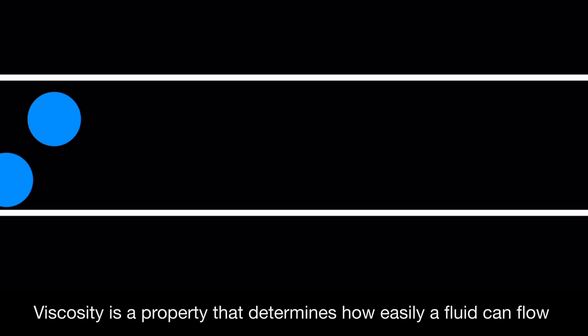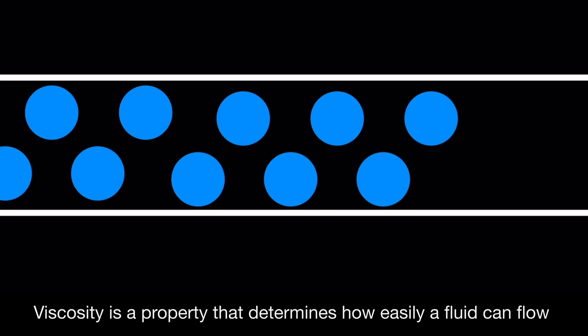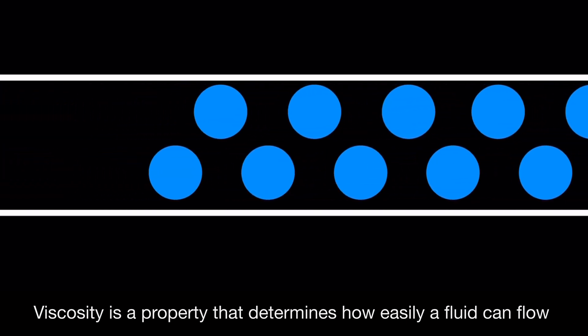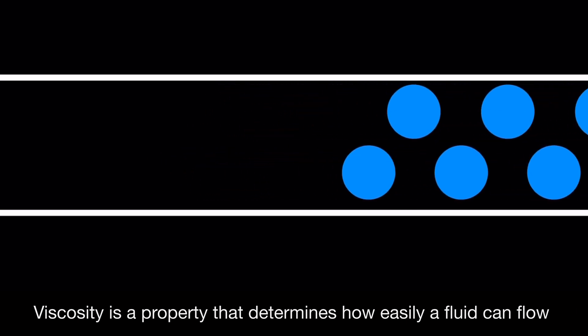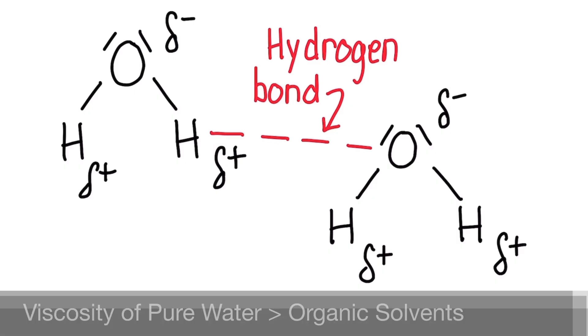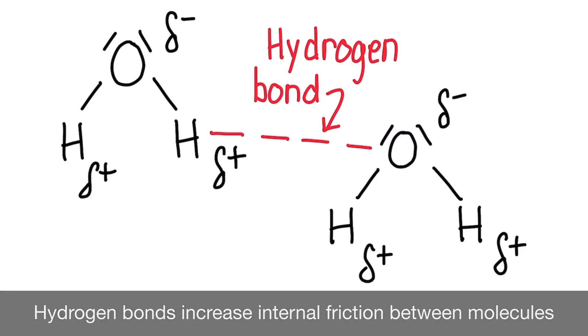The second property to consider is viscosity. Viscosity is a term that describes the stickiness of a fluid — in other words, how easily it can flow as a result of internal friction between the molecules. Although this animation is oversimplified, pure water has a much greater viscosity than other organic solvents because of hydrogen bonding. The hydrogen bonding increases the internal friction between water molecules, resulting in water having a higher viscosity than organic solvents.